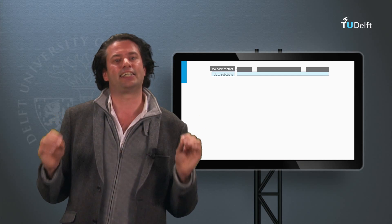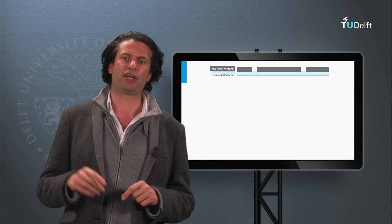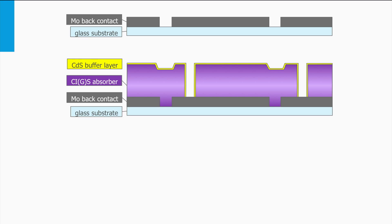CIGS cells in a module are similarly interconnected as we have seen for thin film silicon cells discussed earlier. First, the molybdenum back contact is deposited on top of the glass substrate and the cell areas are defined by laser scribes. Then the CIGS p-layer and cadmium sulfide n-layer are deposited including a laser scribe step.